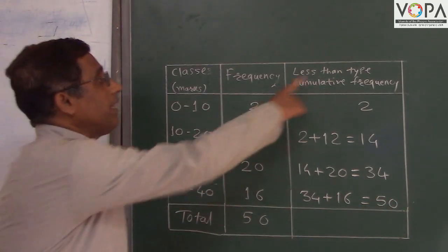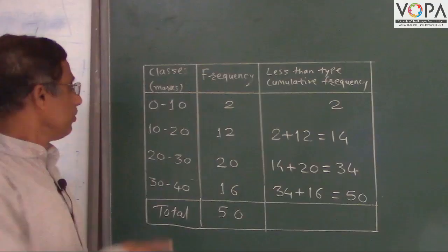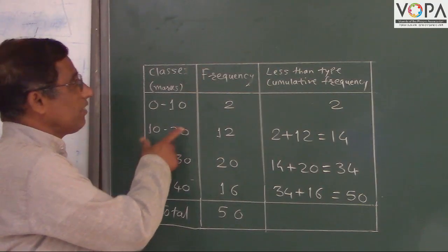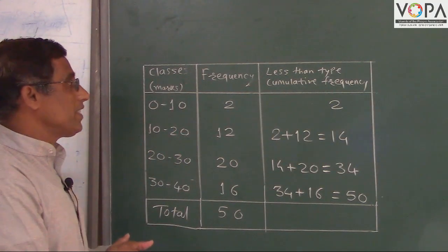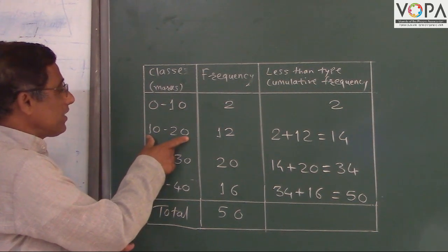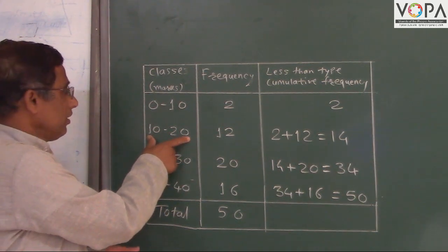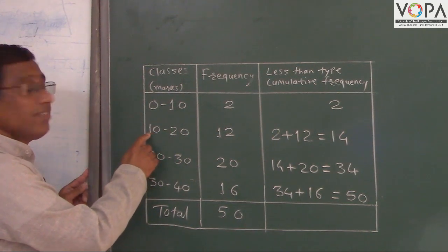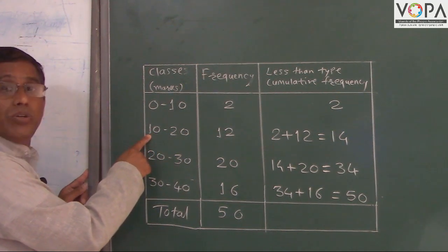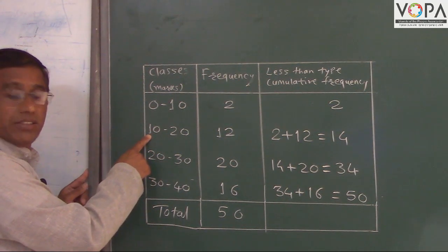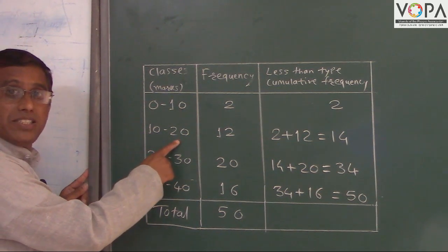This is the less than type cumulative frequency. We ask some questions about this less than type cumulative frequency table. So this is the class 10 to 20. In this class, this is the lower class limit 10 and upper class limit which is 20.